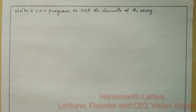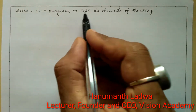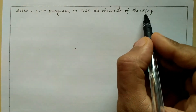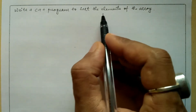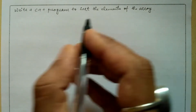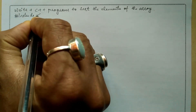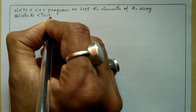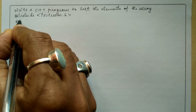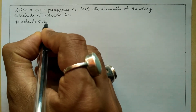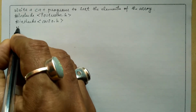Hello and welcome to Vision Academy. My name is Hanuman Ladwa, and in this video we are going to write a C++ program to sort the elements of an array. We are going to arrange all the elements of an array in ascending order. Now let us write the preprocessor directives: hash include in angular brackets, the iostream.h header file, and hash include conio.h header file.